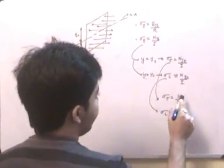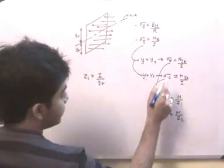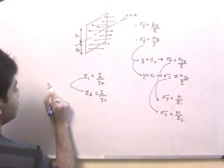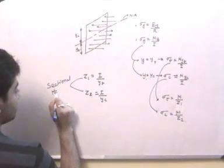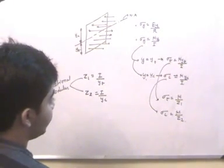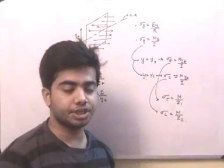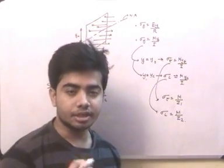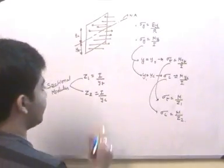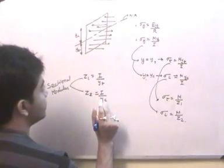Therefore, sigma_t = M/Z1, where Z1 = I/yt, and sigma_c = M/Z2, where Z2 = I/yc. Z1 and Z2 are called the sectional modulus. If Z1 and Z2 are higher, sigma_t and sigma_c will be lower. So if a cross-section has a greater sectional modulus, the bending stress will be less. Here I is the second moment of area, and yt is the distance of the neutral axis from the extreme fiber.